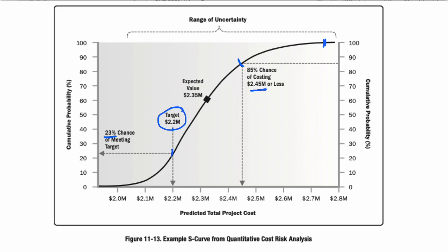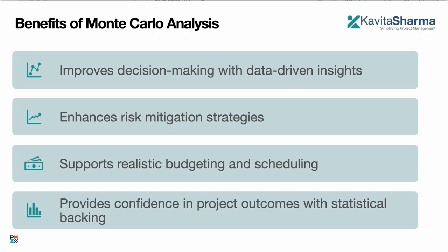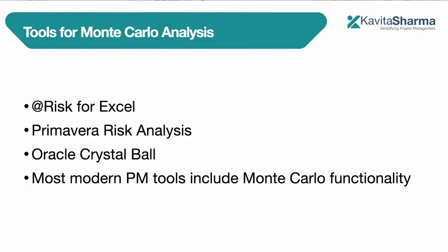Based on a lot of data, permutation combination, and the accuracy of the algorithm, the benefit is that you get insight into confidence levels, you can check and manage risk, and you don't over-commit — it enables realistic budgeting and scheduling. You can do the same thing for schedule as well. It provides confidence in the project outcome. Tools available include @Risk as an Excel add-on, Primavera, Oracle Crystal Ball, and Microsoft Project Server.